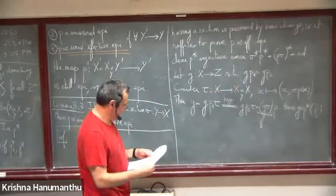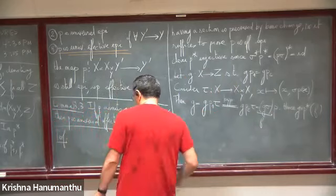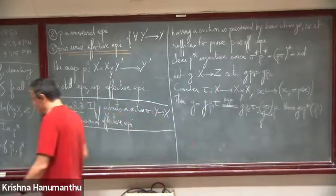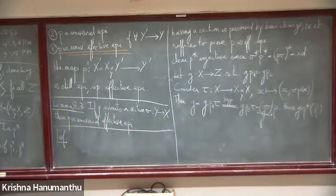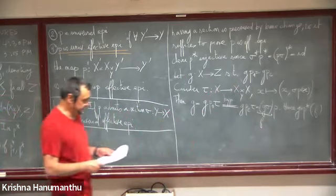So there is this nice result that says a map with a section is always a universal effective epimorphism.